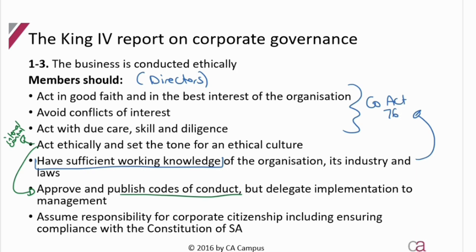I'm linking internal control, the Companies Act, and King together, because King is all about good corporate governance — having a strong internal control structure is corporate governance. I can see the merge between all these different topics and can refer to a specific act that covers the requirements. The board should approve and publish codes of conduct but delegate implementation to management, though the board remains responsible. If management are not implementing the codes of conduct, the board will be held accountable.